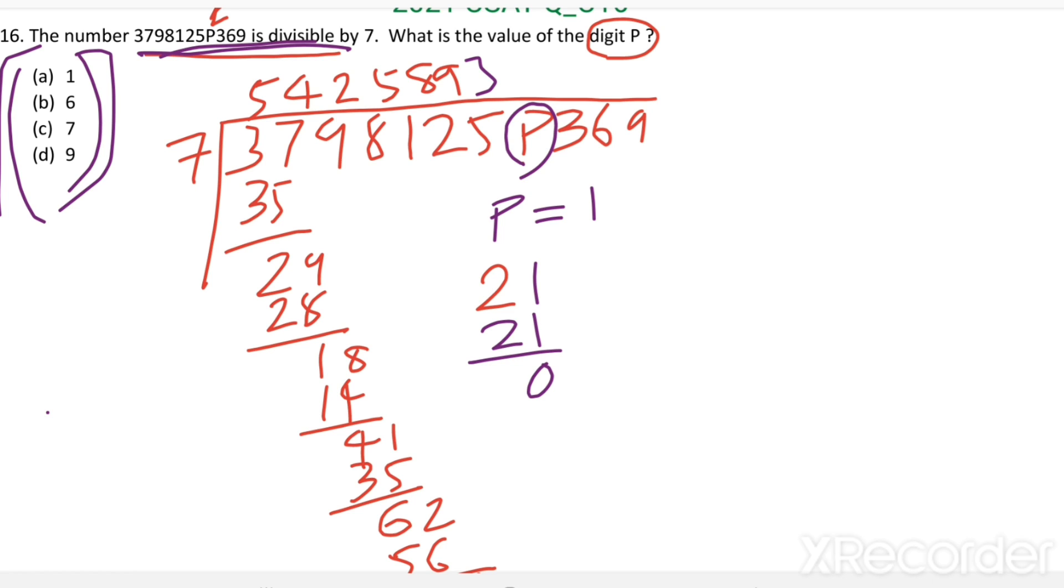Then take this 3. In 3, there is no 7s. 0 7s are 0. We get 3 here. In 36, there are 5 7s. 5 7s are 35.